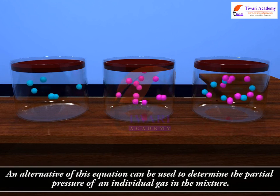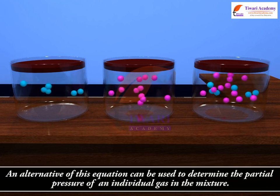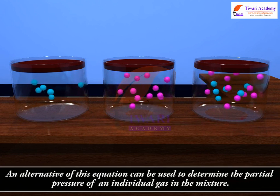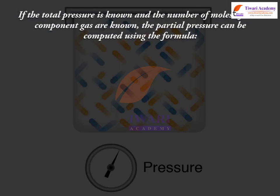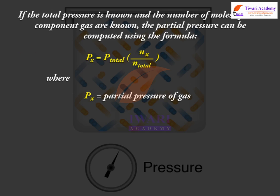An alternative of this equation can be used to determine the partial pressure of an individual gas in the mixture. If the total pressure is known and the number of moles of each component gas are known, the partial pressure can be computed using the formula: Px equals P total times Nx by N total, where Px is the partial pressure of gas and P total is the total pressure of all gases.